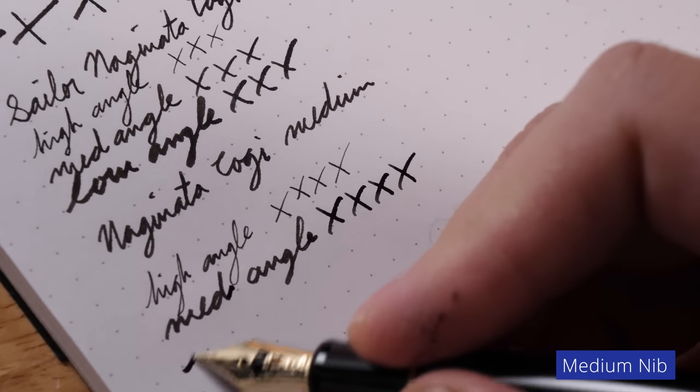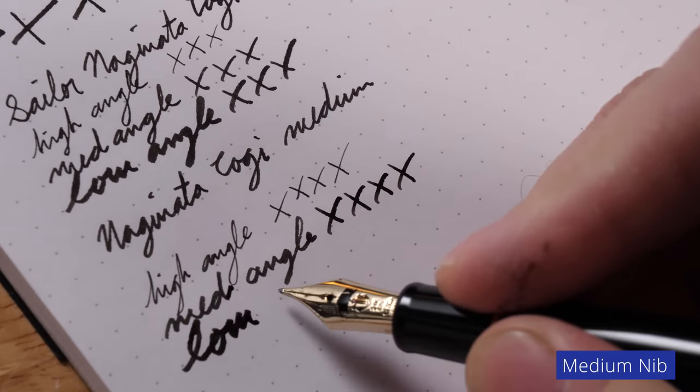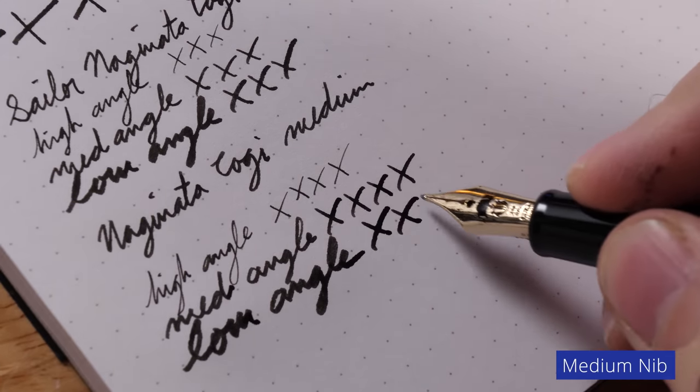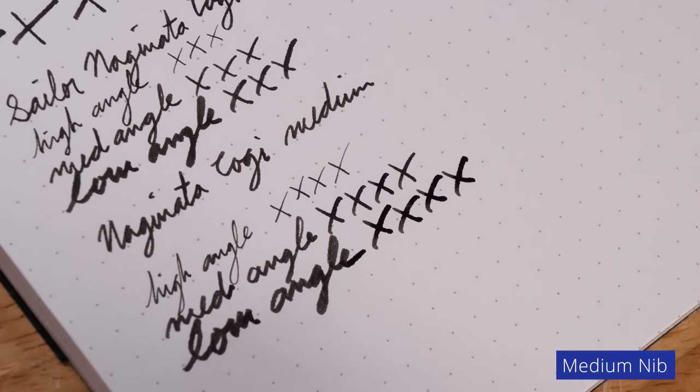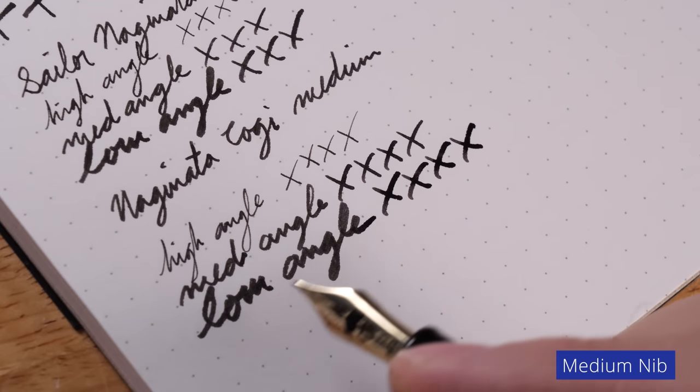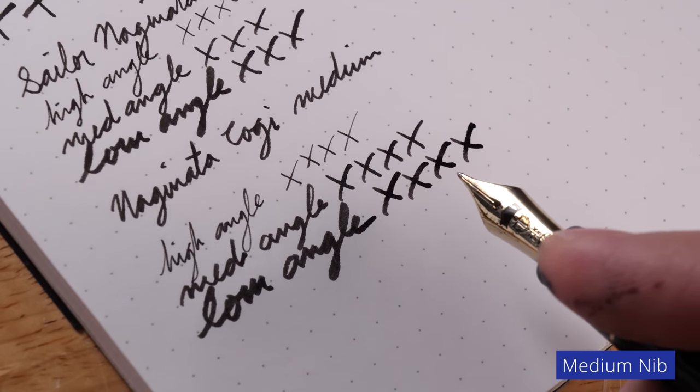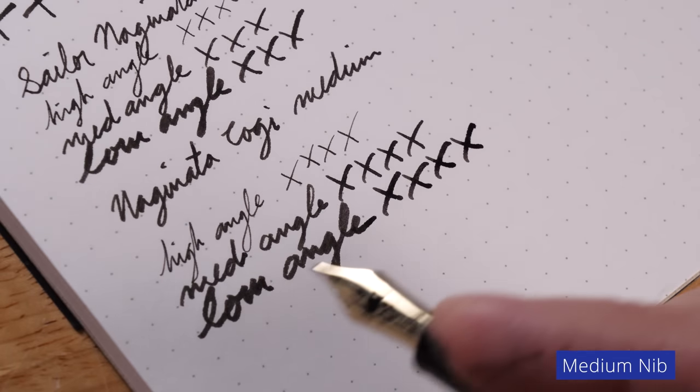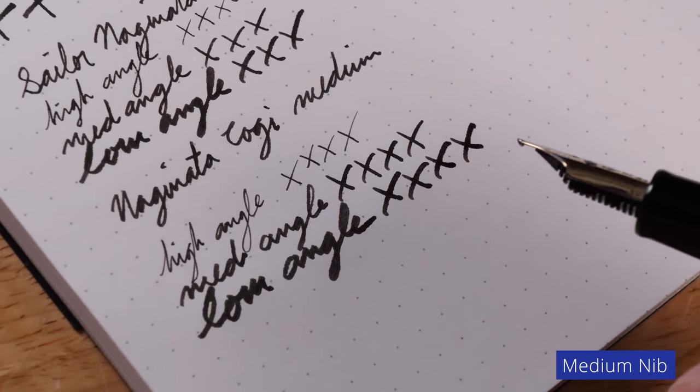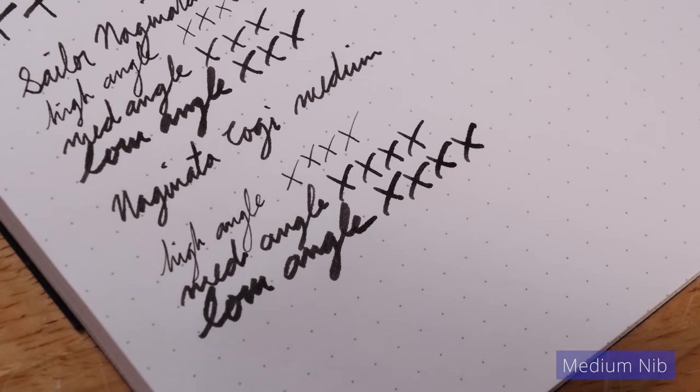And then we get a low angle. I need a little bit more than this five millimeter ruling is giving me here. There you go. So it writes a little broader, a little wetter. So this one, you get a high degree of variance. I think you get the best range of really fine to really broad using the medium.